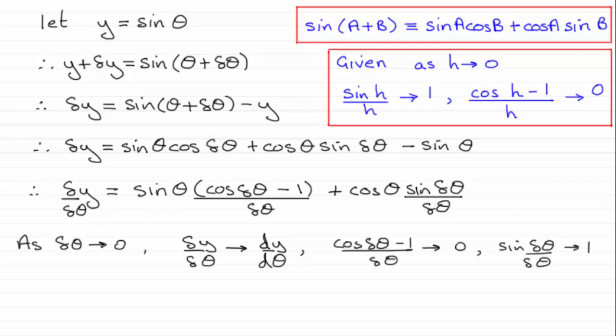So that would translate to this result that the cosine of delta theta minus 1 over delta theta tends to 0 and the sine of delta theta over delta theta tends to 1. So I can substitute these results into here and here.